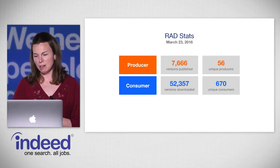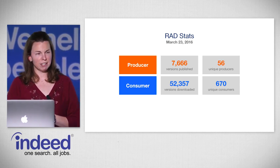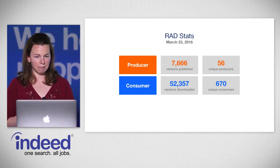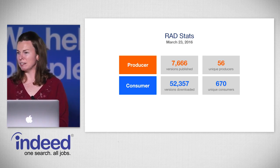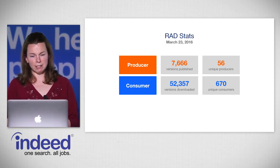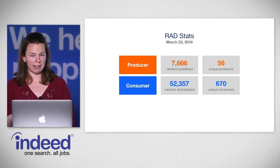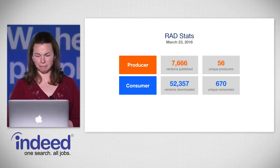For a 24-hour period on a day the previous week, 56 unique producers published over 7,666 unique versions of data into the RAD system. On the consumer side, 670 deltas running in production were responsible for over 52,357 version downloads onto machines across the infrastructure.